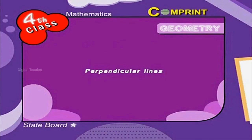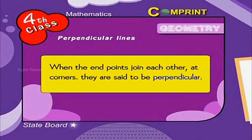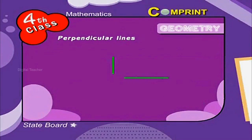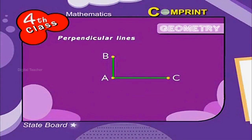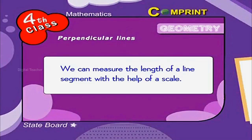Perpendicular lines. When two line segments join each other at corners, they are said to be perpendicular. AB and AC are perpendicular lines. Edges of a postcard and edges of a table at a corner are a few more examples.